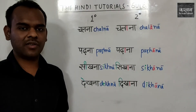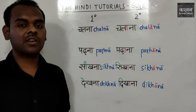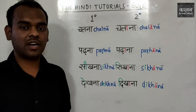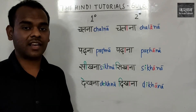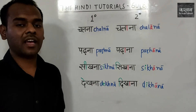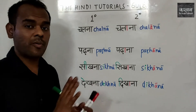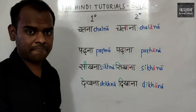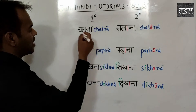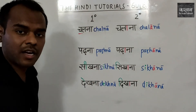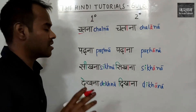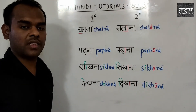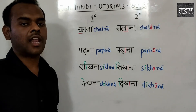Espero que hayan entendido el uso de los verbos chalna, chalana, parna, parhana, sikhna, sikhana. Ahora les voy a mostrar cómo hacer este cambio. Lo que hacemos para cambiar el verbo es mover el estrés — el acento — de la palabra. En la palabra chalna, el estrés está en la primera consonante. En chalana, el estrés está en la segunda consonante. Escuchen: chalna, chalana.